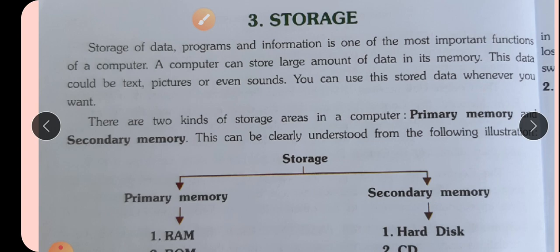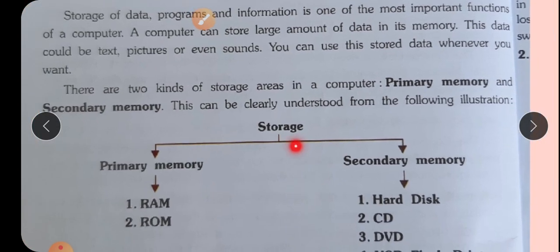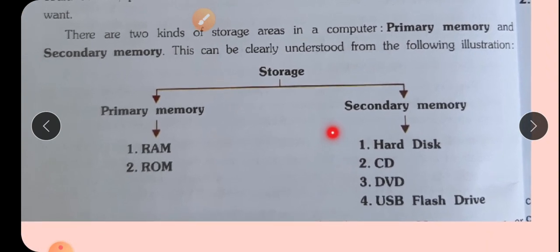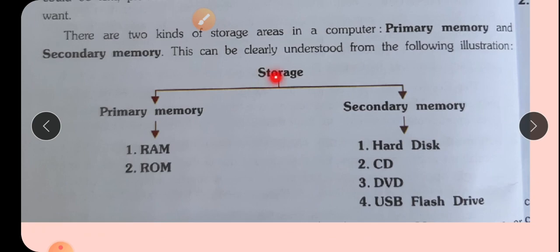There are two kinds of storage area in a computer: primary memory and secondary memory. Computer memory has two types — primary and secondary. Primary is inside the computer, it is internal memory. Secondary is outside, it is external memory. Storage is of two types: one is primary and the other is secondary.